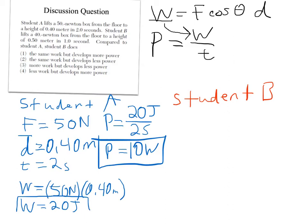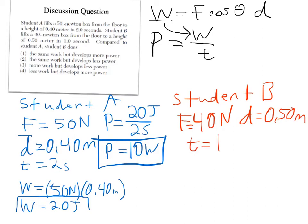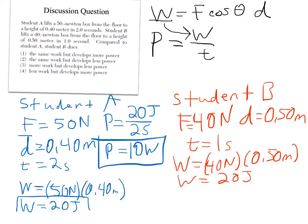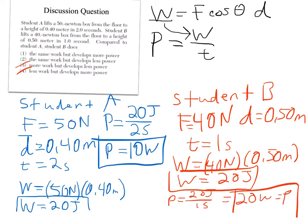Now student B. Student B lifts a 40-newton box, applying that same normal force, to a height of 0.5 meters in one second. Work equals 40 newtons times 0.50 meters, which equals 20 joules — same work. So we can eliminate the answers involving different work amounts. Then power equals work over time: 20 joules over one second equals 20 watts. So student B had more power. Compared to student A, student B does the same work but develops more power — answer choice 1.